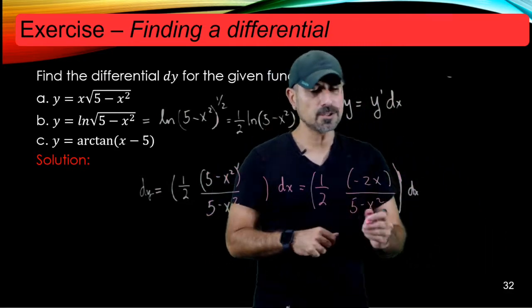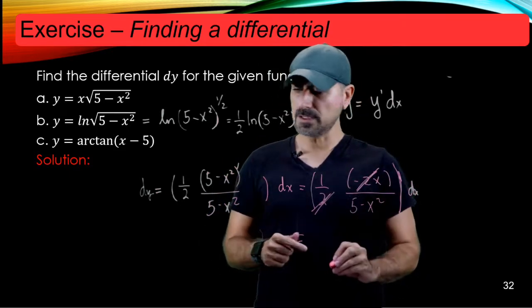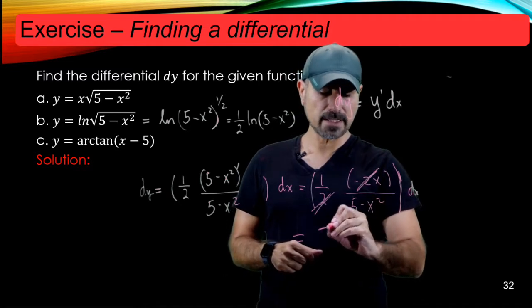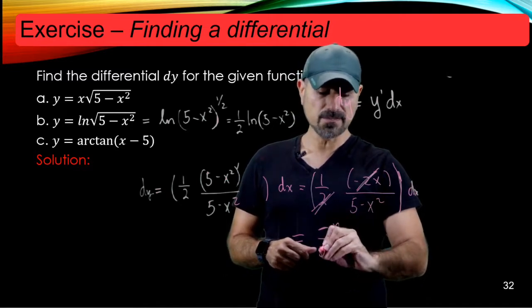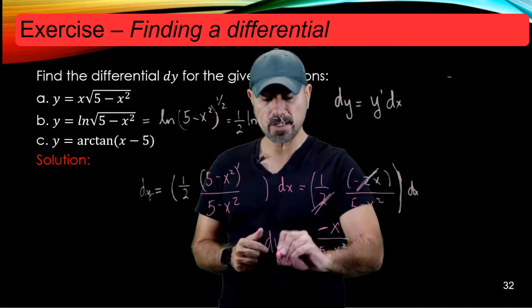And the 2's cancel here, right, the 2's cancel here. So you conclude that dy is equal to minus x divided by 5 minus x squared dx. Let me just write dy here.